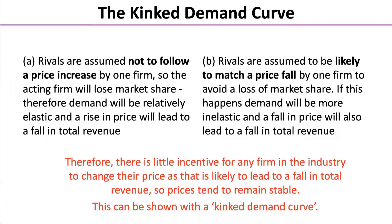What the model is telling us is that there is little incentive for any firm in the industry to change their price, as it's likely to lead to a fall in total revenue. So prices tend to remain stable — and this is why it's called the kinked demand curve, which we can show with this kink.